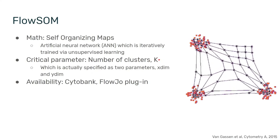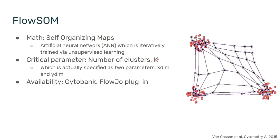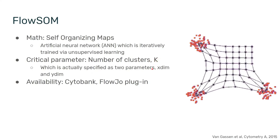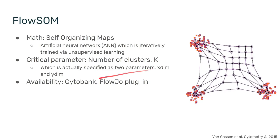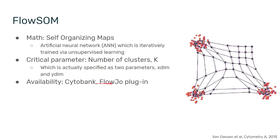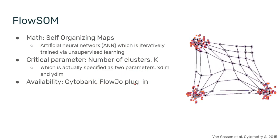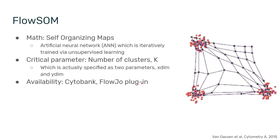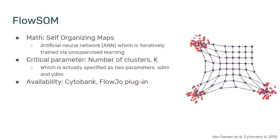So the critical parameter is how many clusters you want. FlowSOM is available through Cytobank and through a FlowJo plugin, making it one of the easier algorithms to run.